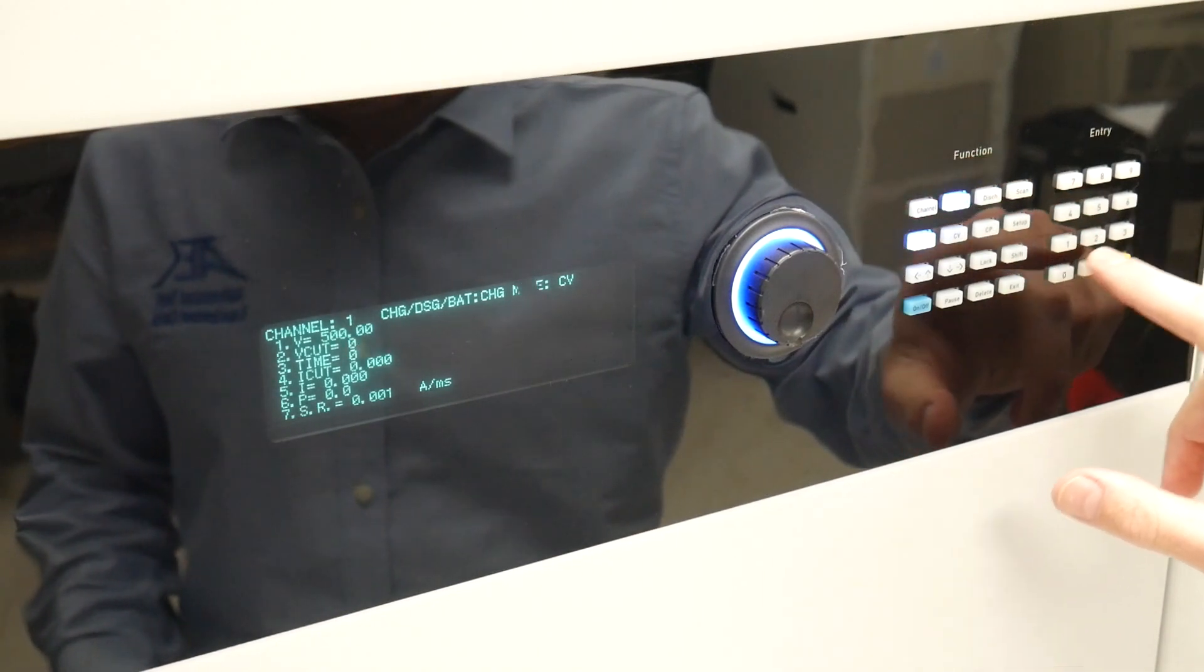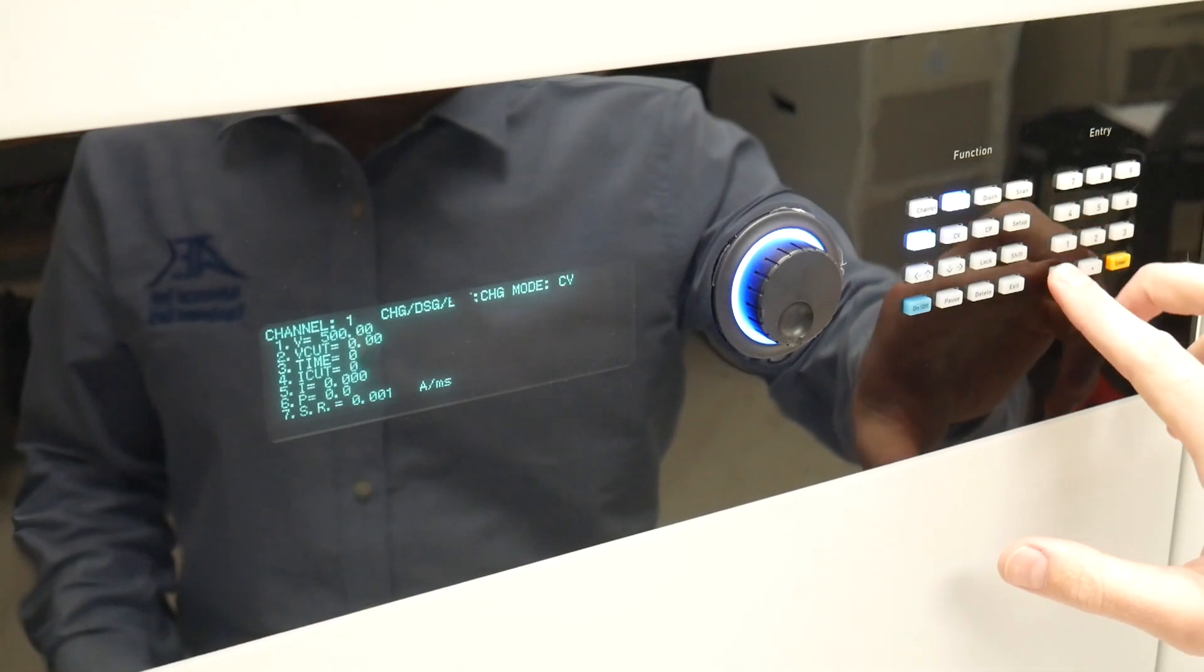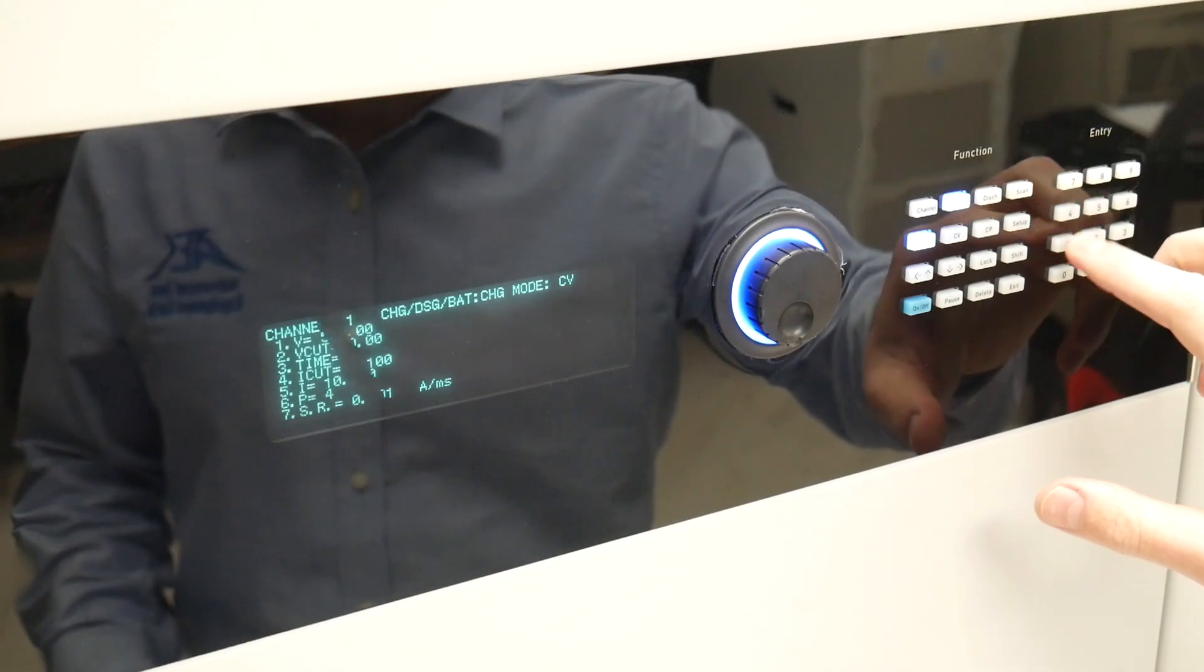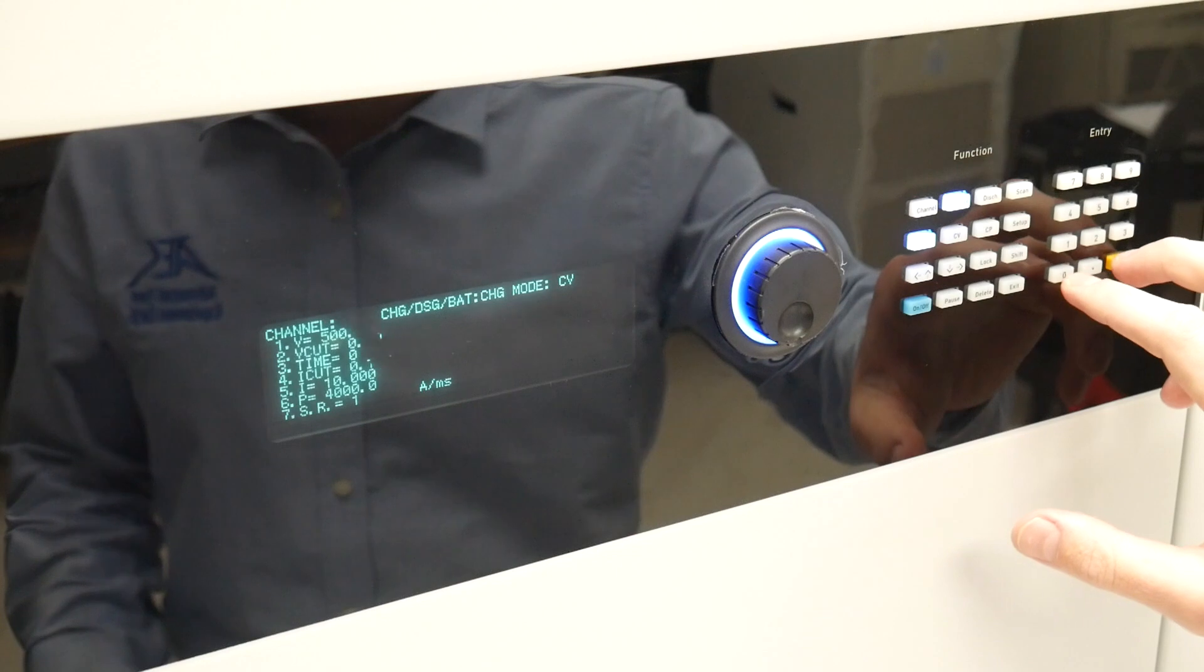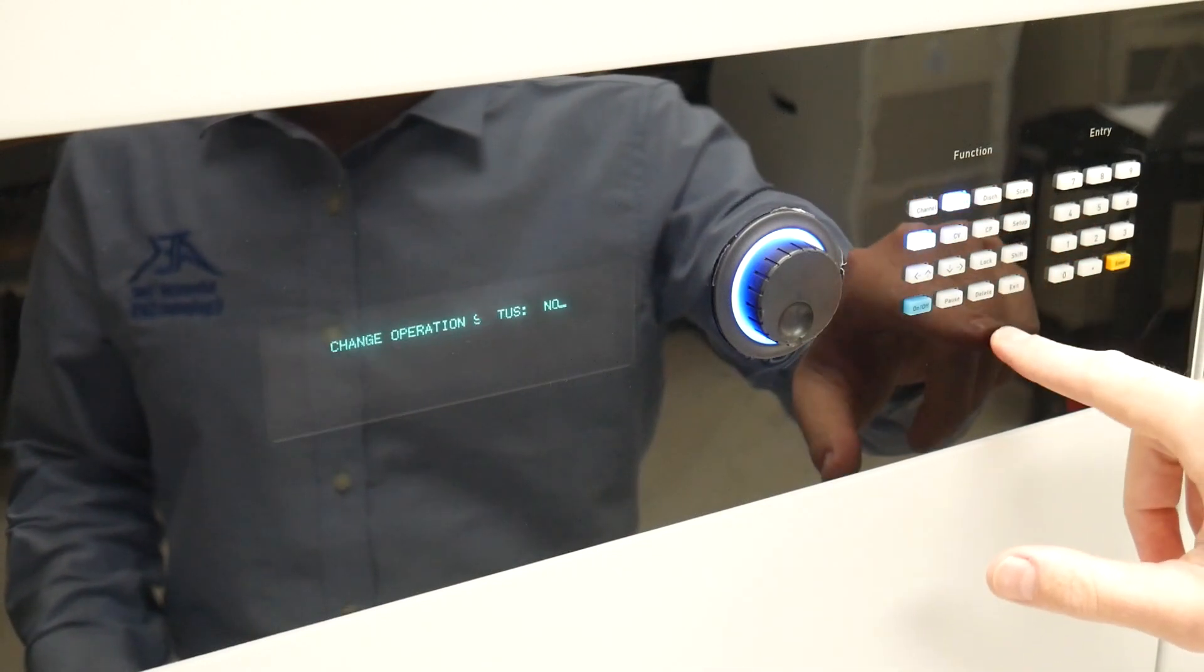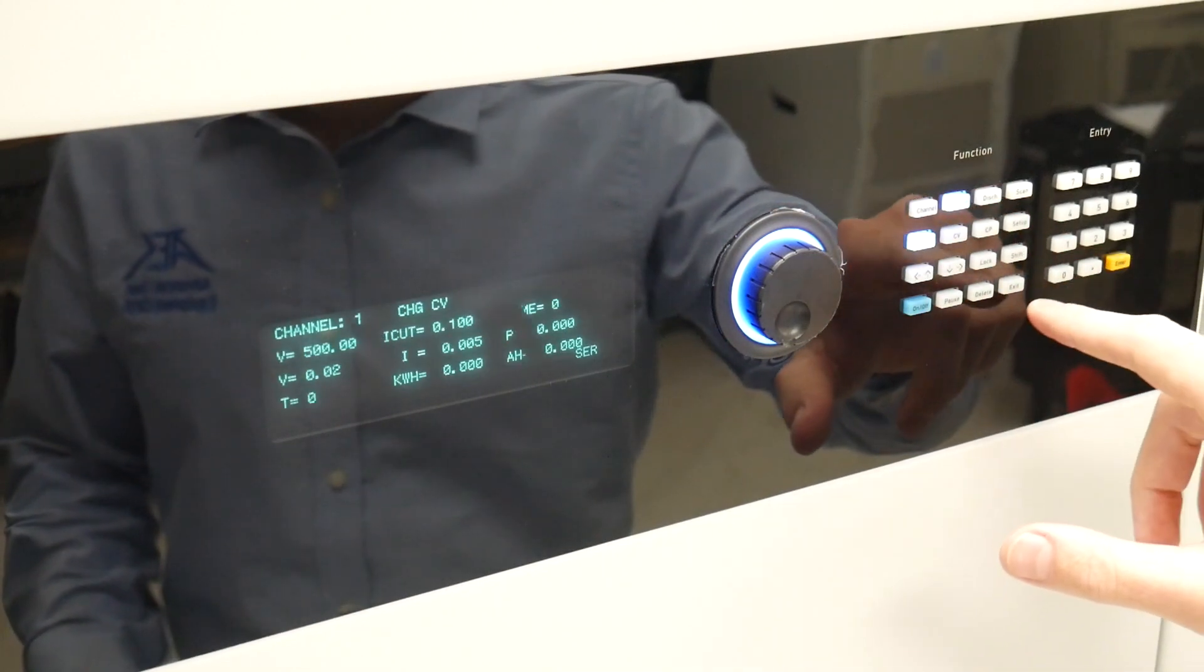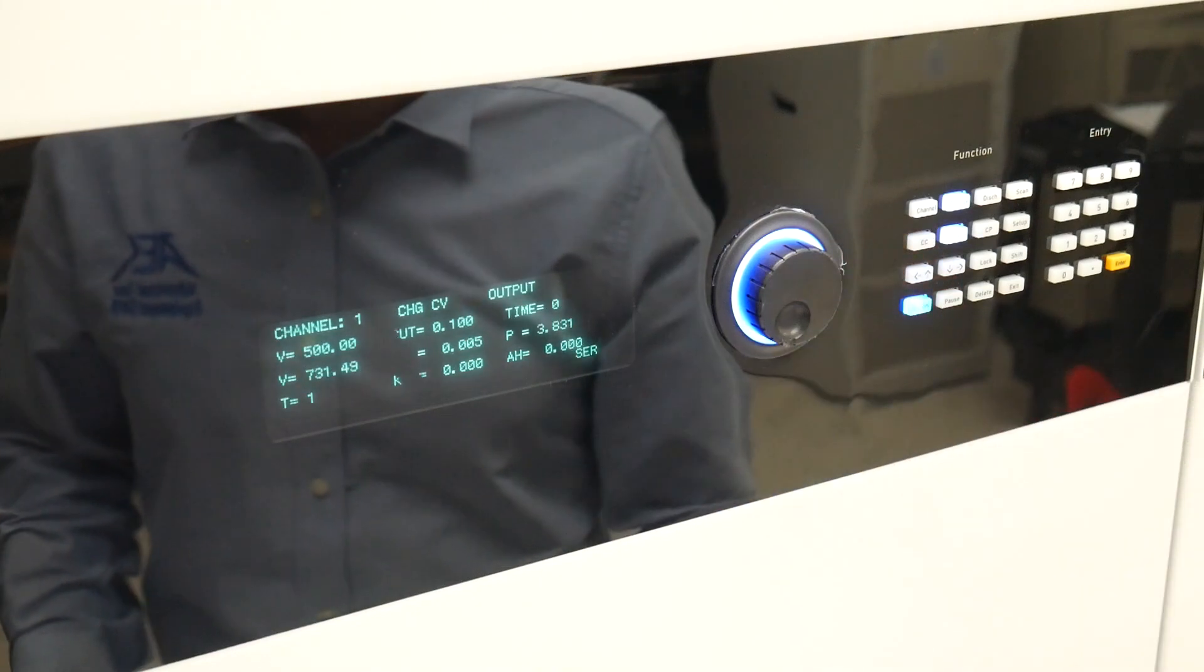We'll start with setting the constant voltage charge mode by clicking charge then CV. We update voltage to 500 volts, voltage cutoff in time to zero to run indefinitely, the current cutoff at 0.1 amps with a charge current of 10 amps. Power is set to 4 kilowatts with a slew rate of 1 amp per millisecond. When all our settings are ready to go we'll hit exit.